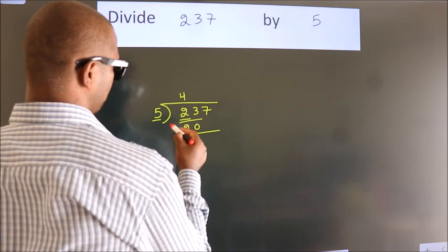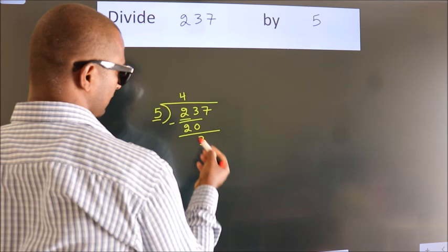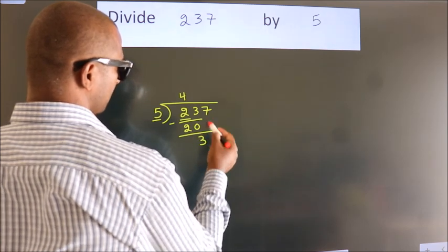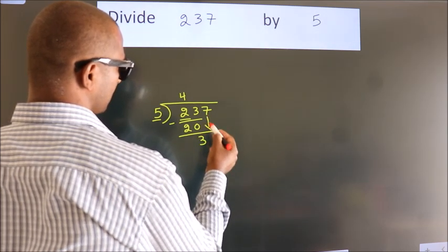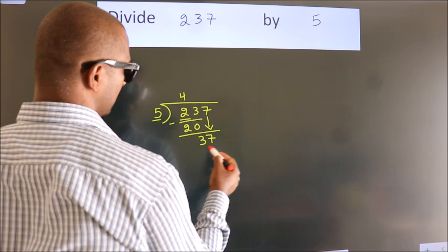Now, we should subtract. We get 3. After this, bring down the beside number. So 7 down, which gives us 37.